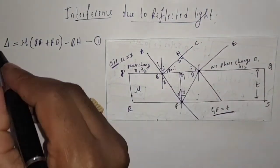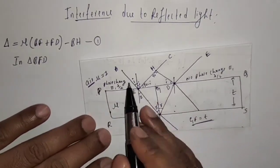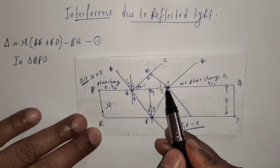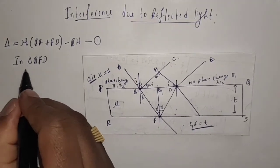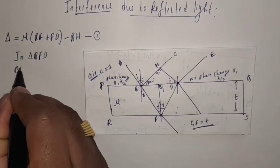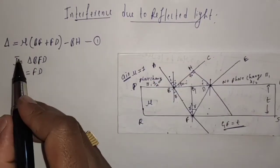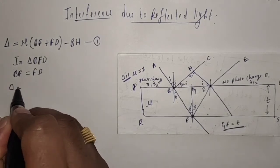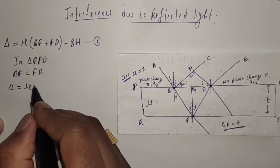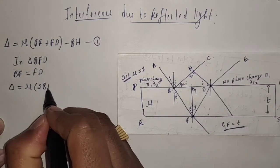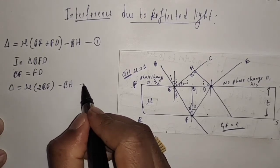Now, in triangle BFD, we can observe that BF is equal to FT. So the above equation becomes: optical path difference equals mu times 2·BF minus BH. In place of FT, I am substituting the BF value to get 2 times BF minus BH. Let us denote this equation by 2.